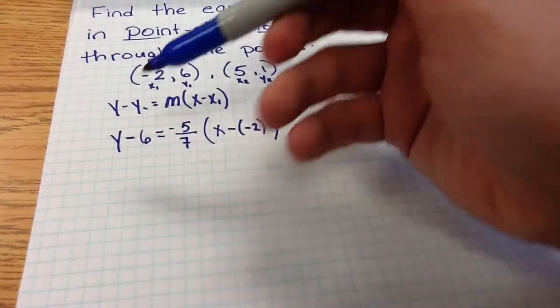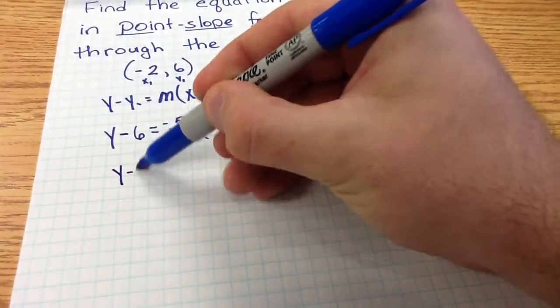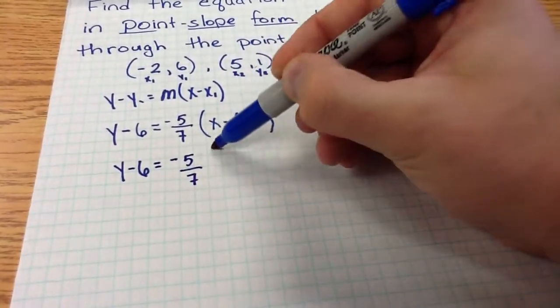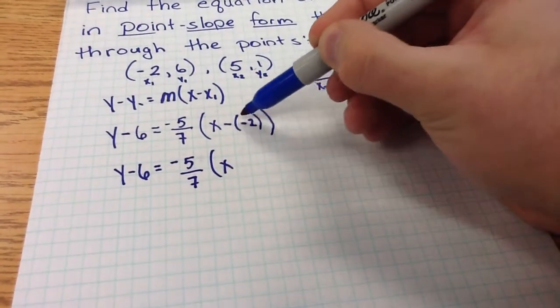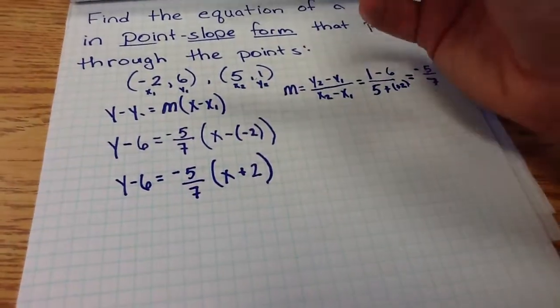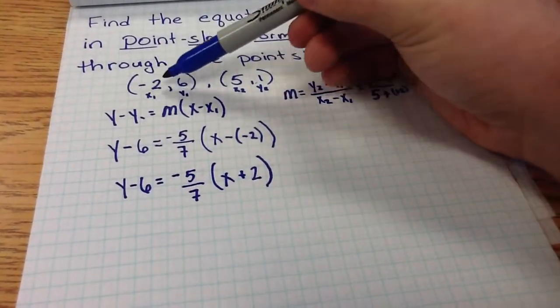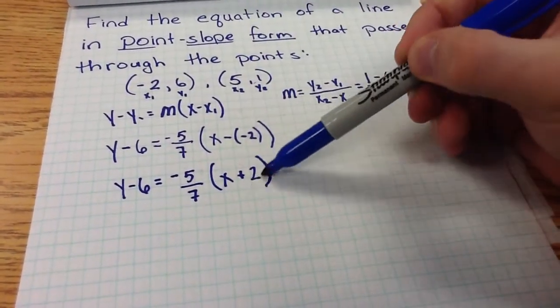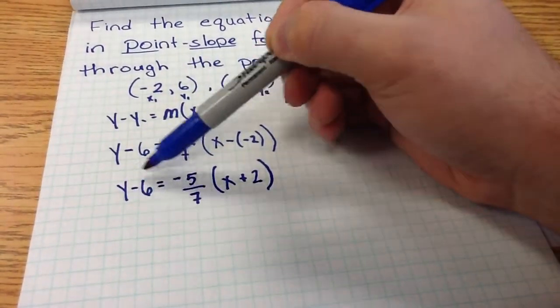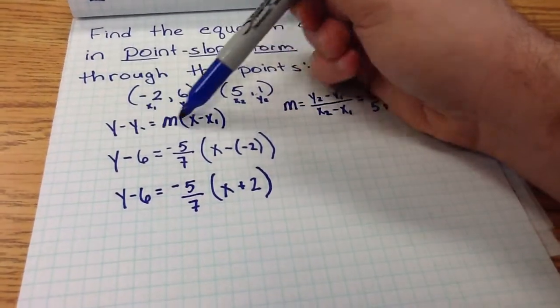I can further simplify this. y minus 6 is equal to negative 5 sevenths times x, and then the two negatives do give me a positive, so it would be plus 2. So it's important to remember that if it's negative in the coordinate, it becomes positive in the equation. If it's positive in the coordinate, it remains negative in the equation, and that's based on the general form.